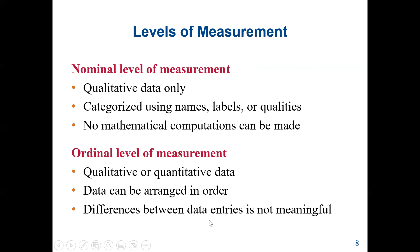Now, the differences between the data entries are not meaningful at the ordinal level. For example, in qualitative terms, the size of a shirt can be medium, small, extra large, or N/A — this means we are using qualitative ordinal data.